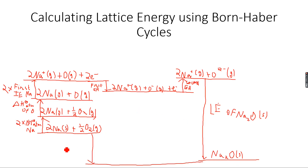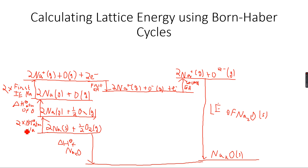Na2O solid — this arrow represents ΔH°f, the enthalpy change of formation of Na2O solid. So this is the enthalpy change of formation of sodium oxide. We can go directly from here to here, or we can take the long route. The only different thing was that we had to multiply 2 with ΔH°ATM and the first ionization energy, because we have 2 moles, so you need to take that into account.